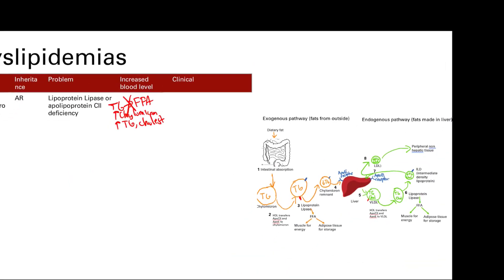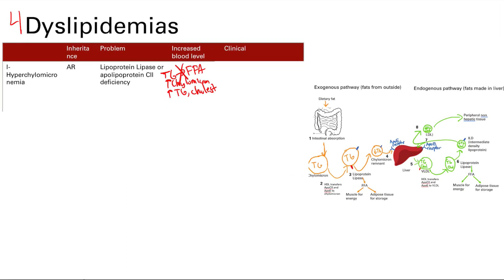Clinically, very high triglycerides can cause pancreatitis — that's inflammation of the pancreas, and high triglycerides are a known cause of that. You can also have hepatosplenomegaly and xanthomas, which are accumulations of lipids in your skin.